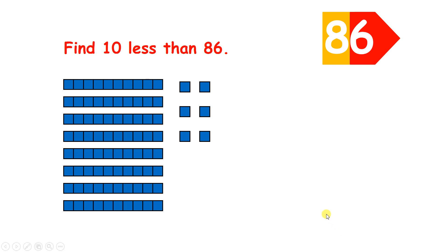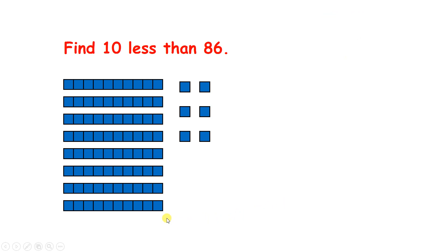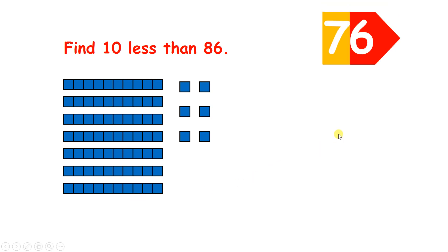Now find 10 less than 86. So if we take away 10, we still have six units, but now we only have seven 10s, so we have 76.